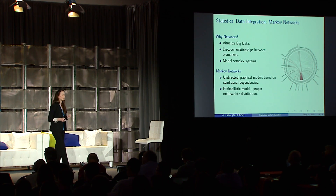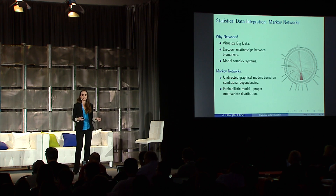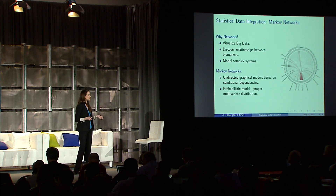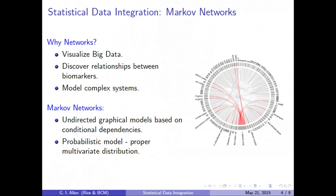There are possibly many ways to think about doing this data integration. I'm going to talk about this with network models. Network models are great — they mimic the kinds of complexities of biological systems that we see, and they're great for visualizing big data. Specifically, I'm going to work with Markov networks, a particular type of network, because they are a very strong probabilistic model that corresponds to a joint multivariate distribution. These are undirected graphical models where an edge between two nodes in a network corresponds to some type of relationship between those biomarkers.